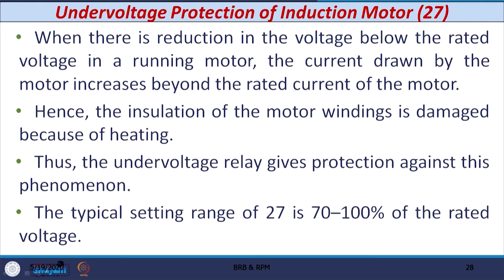The next phenomenon is undervoltage protection of the induction motor, and the relay number is 27. When there is a reduction in voltage below the rated voltage during running condition, the current drawn by the motor increases beyond the rated or full load current of the motor. Hence, the insulation of the motor windings is damaged because of excessive heating. The undervoltage relay gives protection against this type of phenomenon, and the typical setting range is 70% to 100% of the rated voltage.